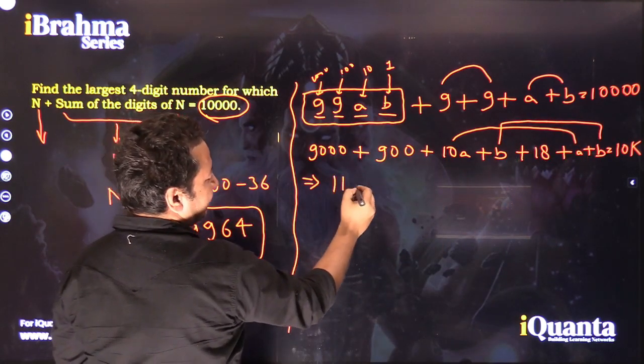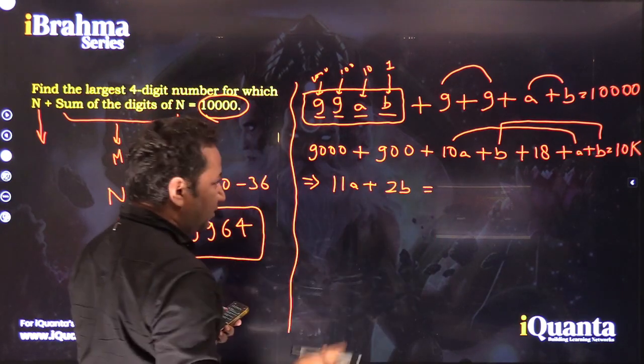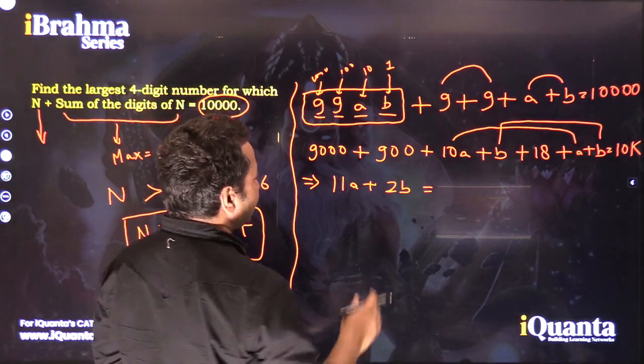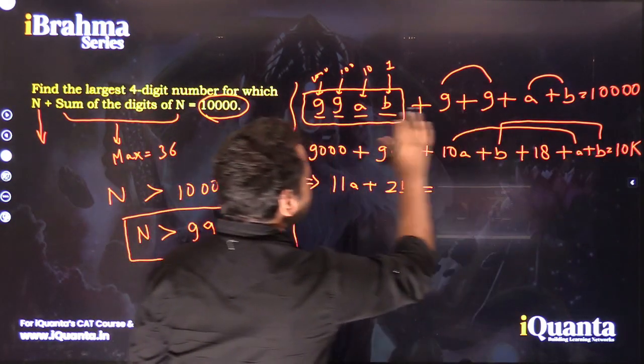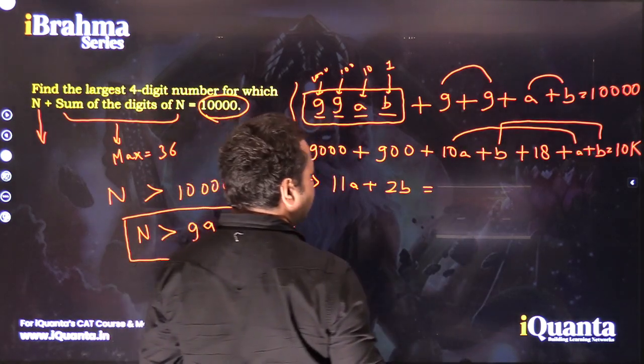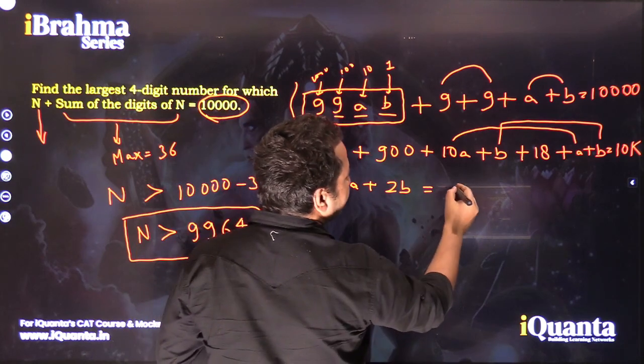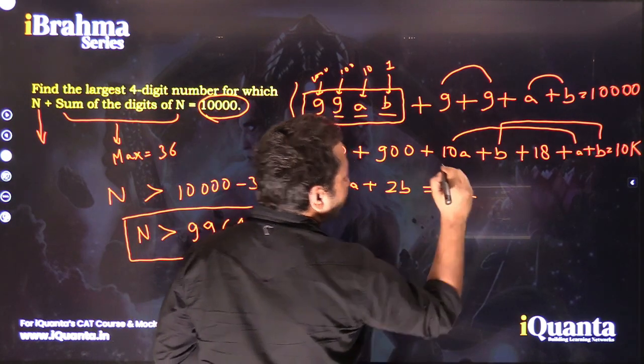Moving all the constants to the right-hand side, we get 10,000 - 9000 - 900 - 18. So if we do that, we get 82.